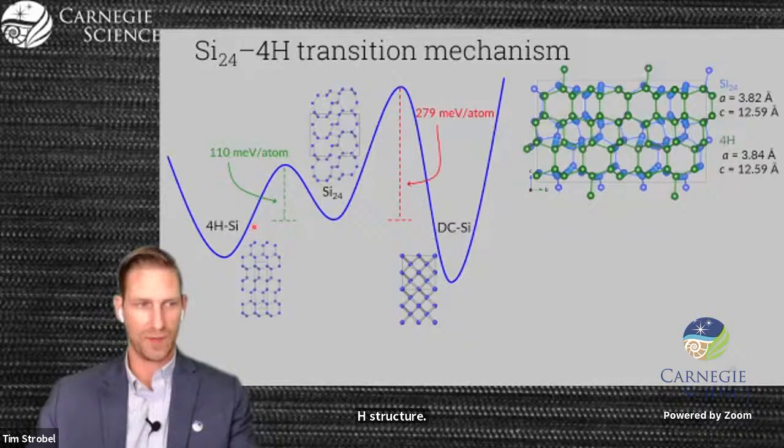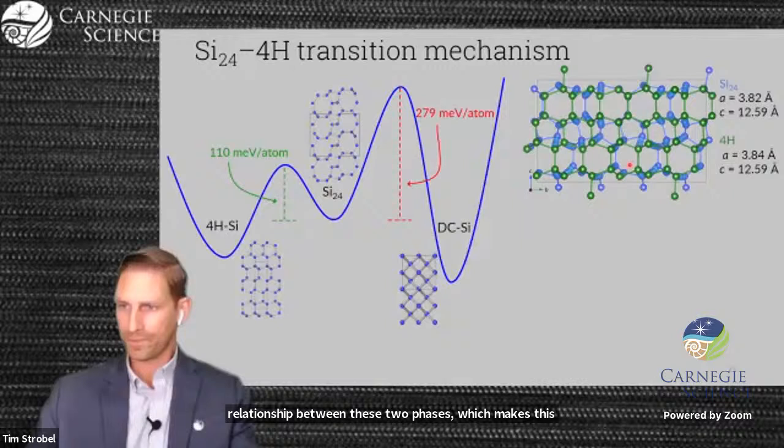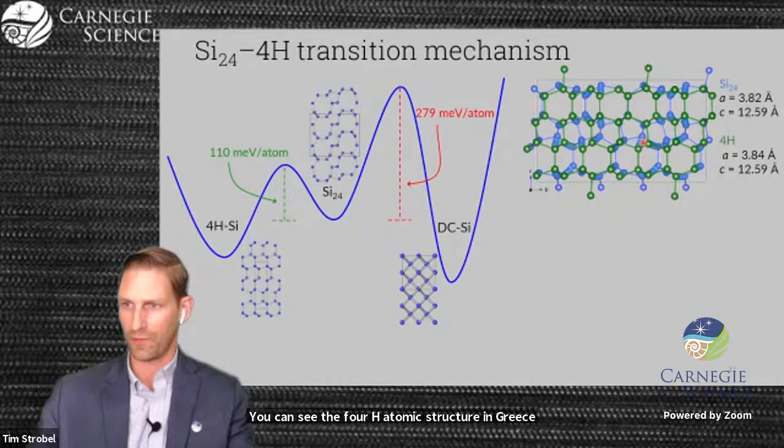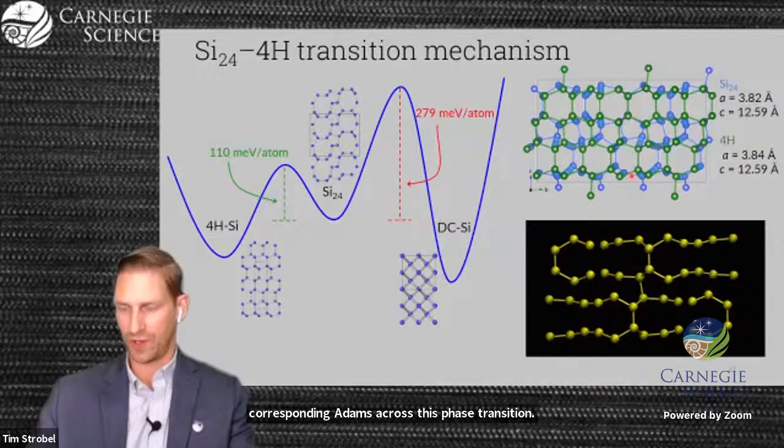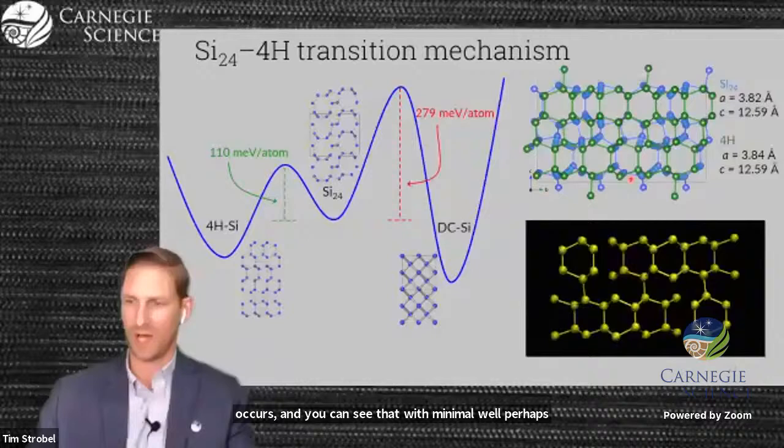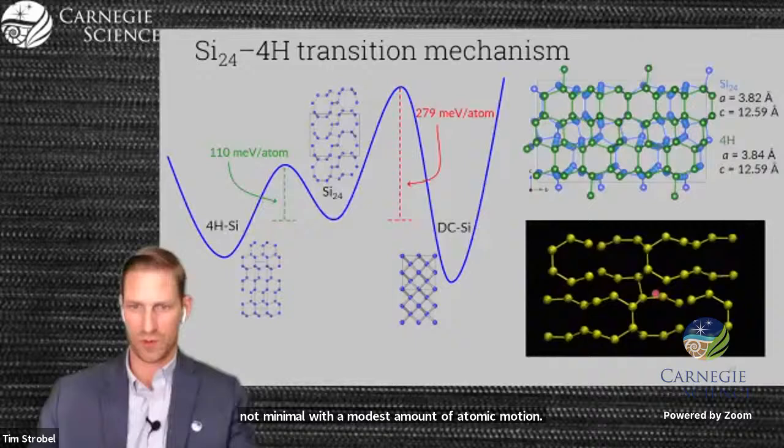Physically, it turns out that there is a structural relationship between these two phases, which makes this process have a lower barrier. You can see the 4H atomic structure in green overlaid with the silicon-24 atomic structure in blue. Here's a short animation of how this phase transition occurs, which would require much more atomic motion to get to the diamond cubic structure.